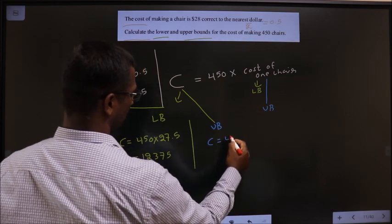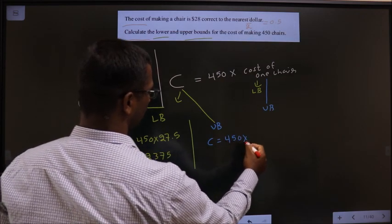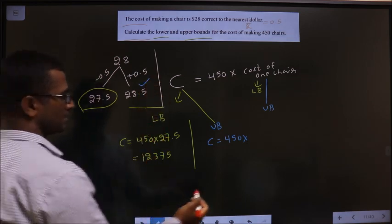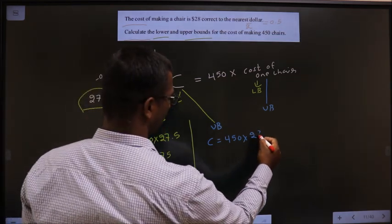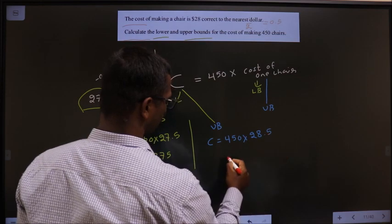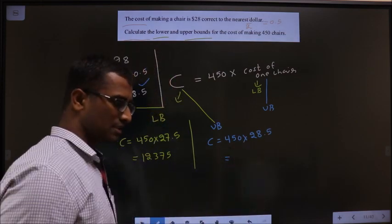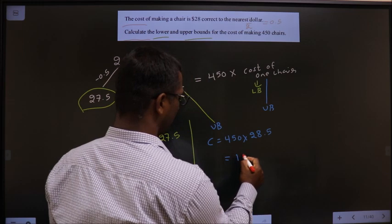So C equal to 450 into upper bound of cost for 1 chair is 28.5. So 450 into this, you will get the answer to be 12,825.